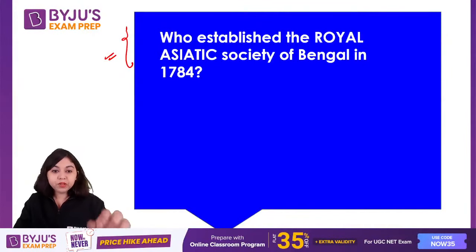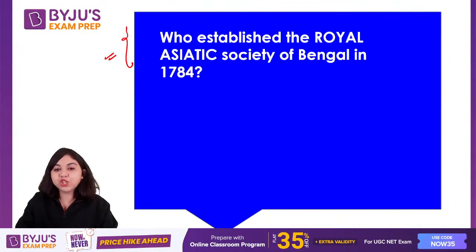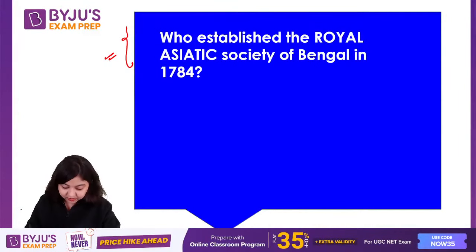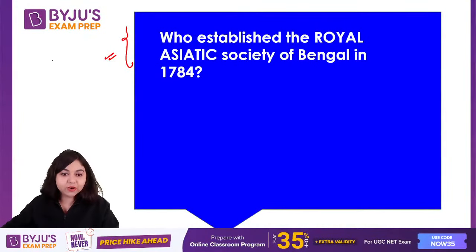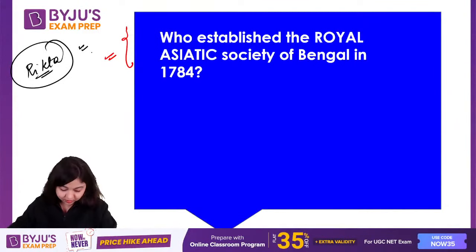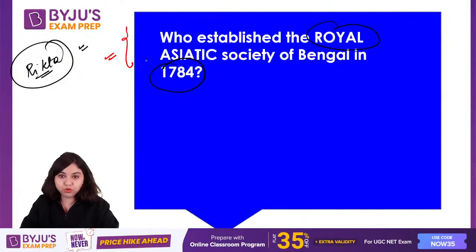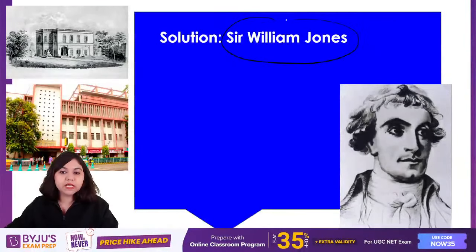Who established the Royal Asiatic Society of Bengal in 1784? Rita gave the answer first — William Jones is the right answer. The Royal Asiatic Society of Bengal was founded in 1784 by Sir William Jones, who is an orientalist and whose research is also significantly quoted.